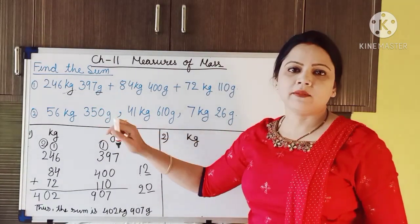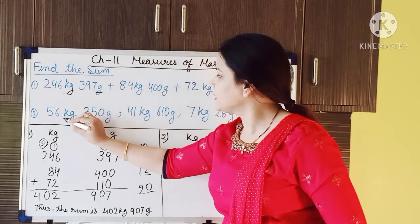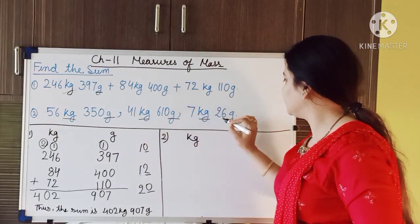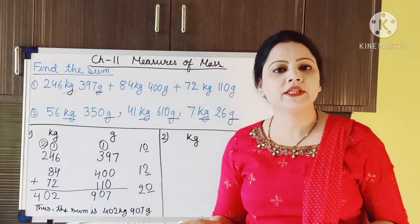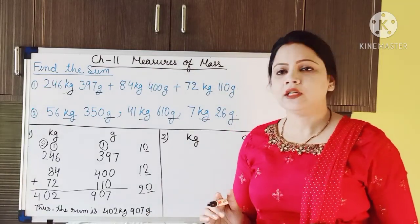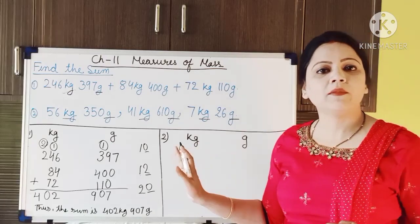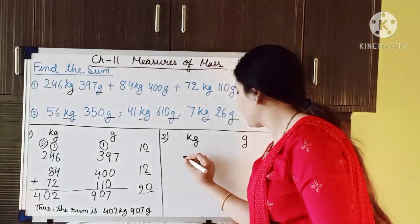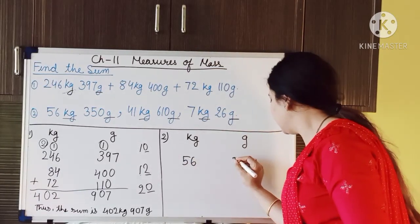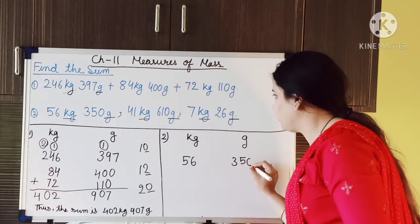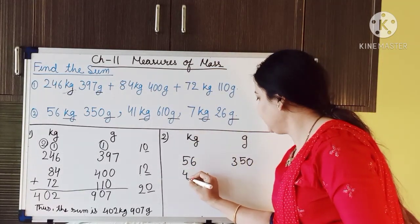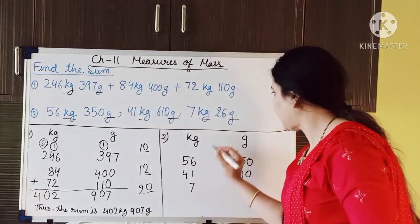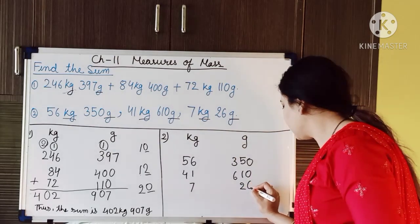Now the second question. Here again we can see kg and g, so the two metric units are kilogram and gram. I have already made two columns for kilogram and gram. The numbers are: 56 kg 350 gram, 41 kg 610 gram, and 7 kg 26 gram.